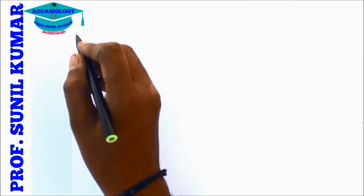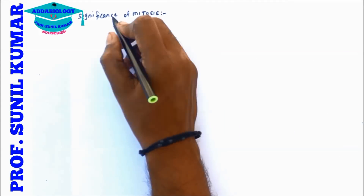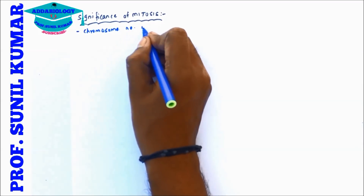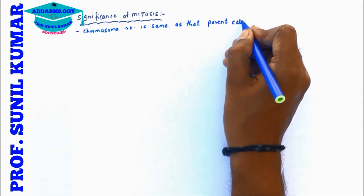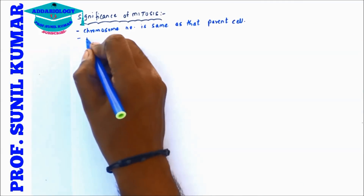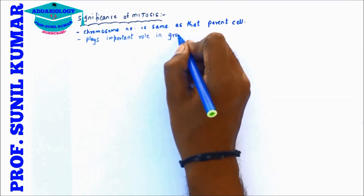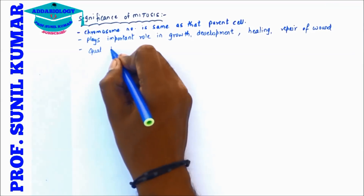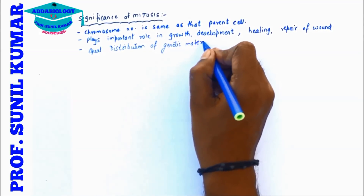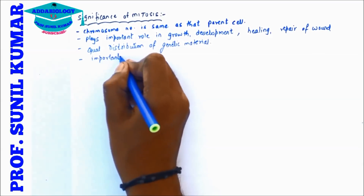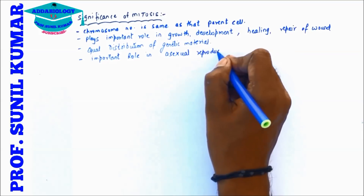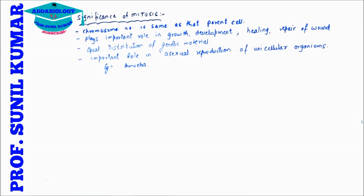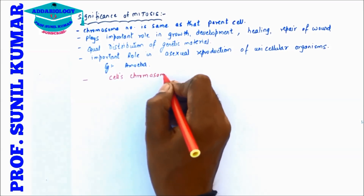Let's understand the significance of mitosis. First, the chromosome number is the same as that of the parent cell — chromosome number is maintained in all cells. It plays an important role in growth, development, and healing and repair of wounds. Since it is an equational division, there is equal distribution of genetic material. It also has an important role in asexual reproduction in unicellular organisms like amoeba.